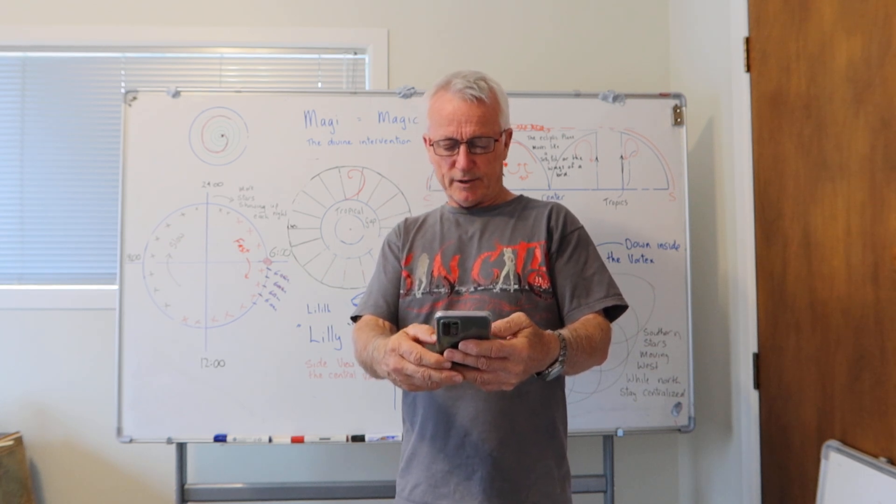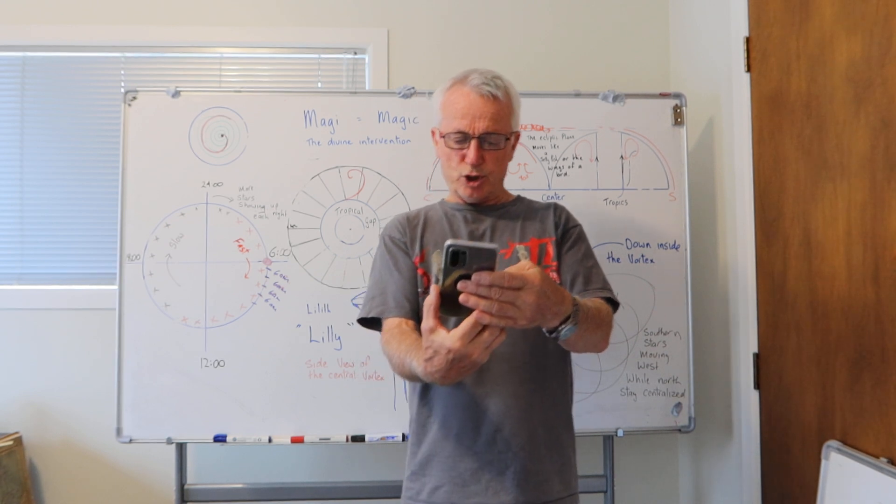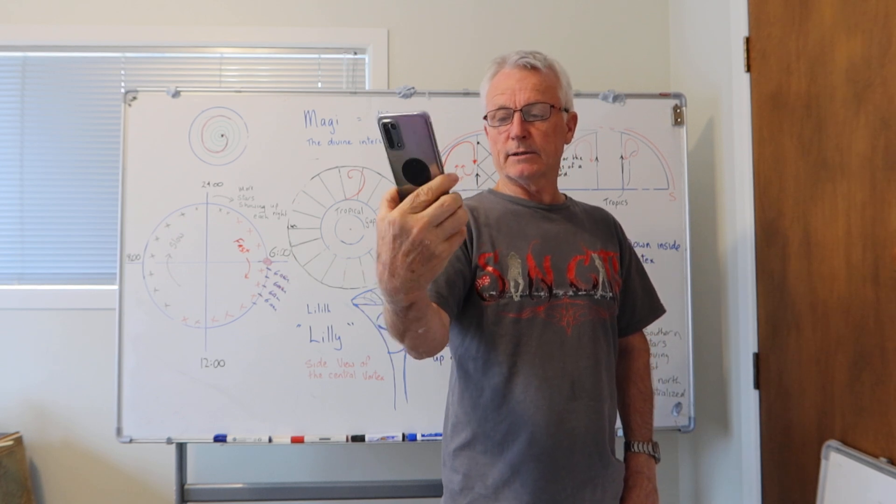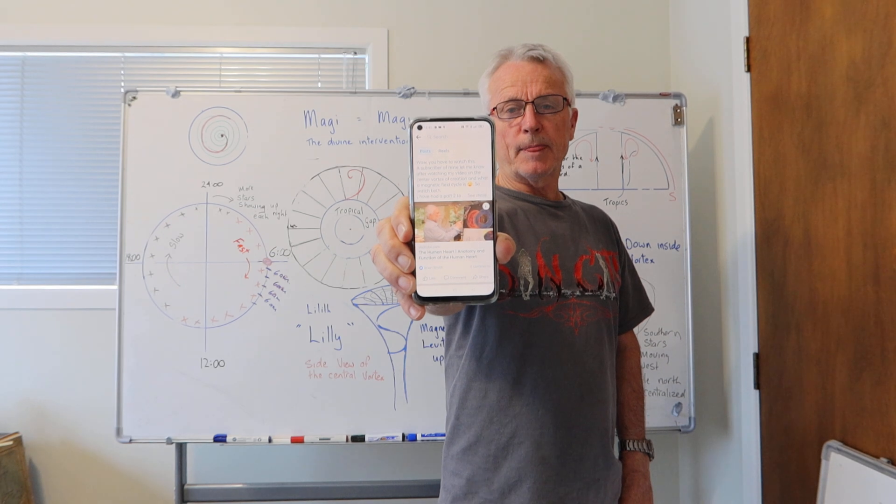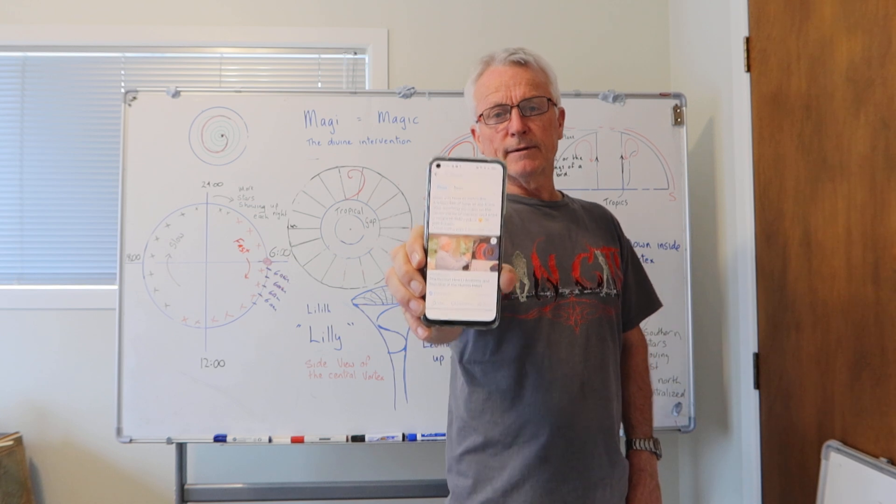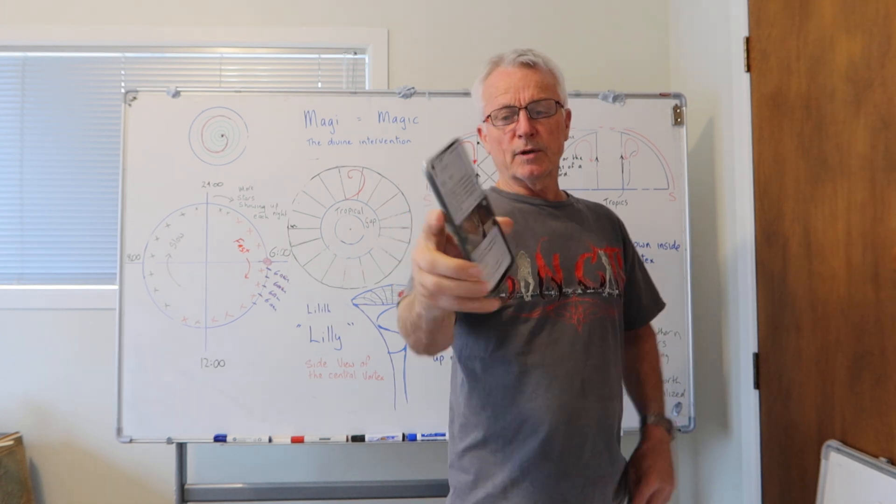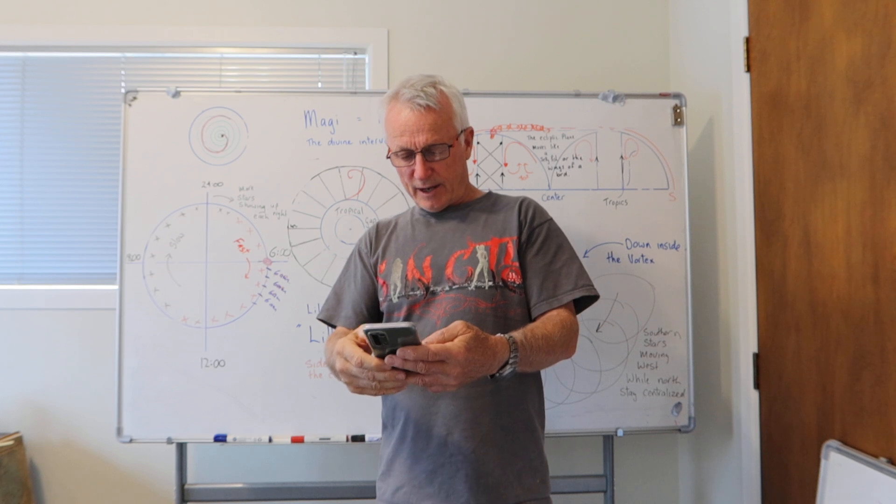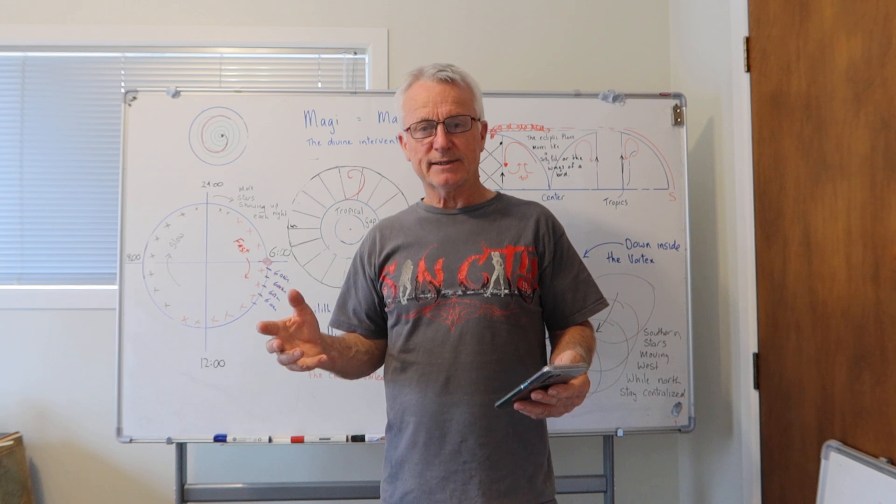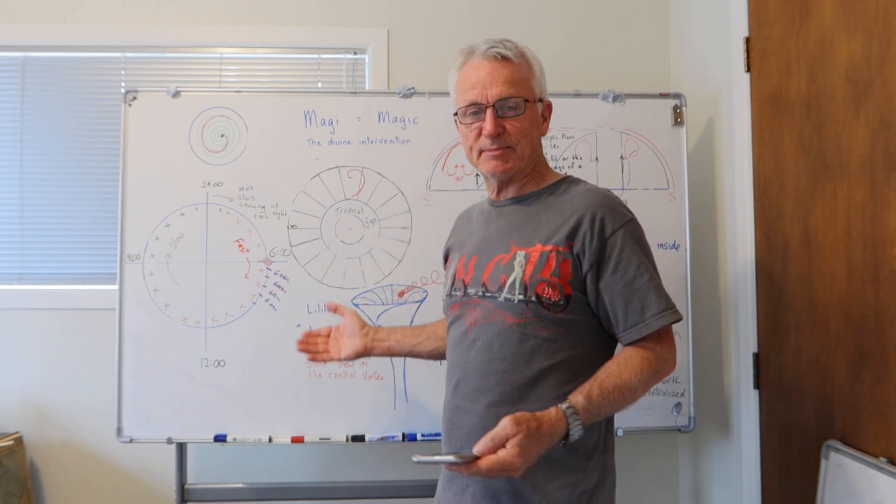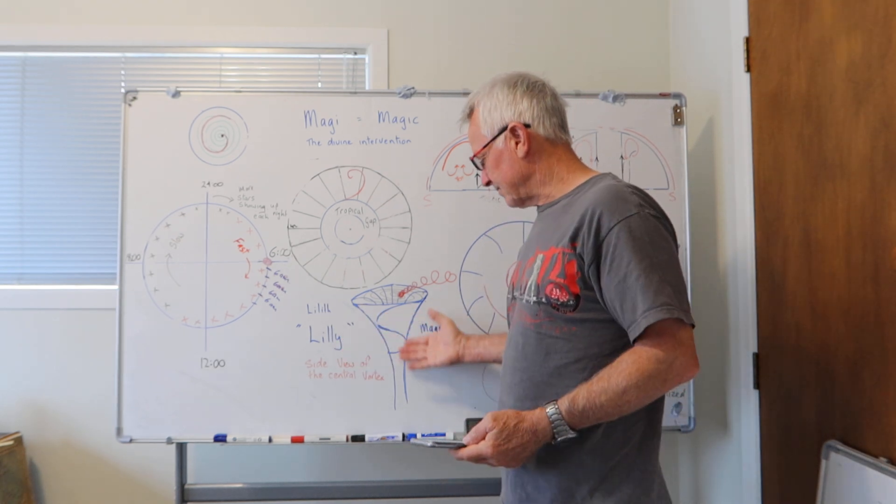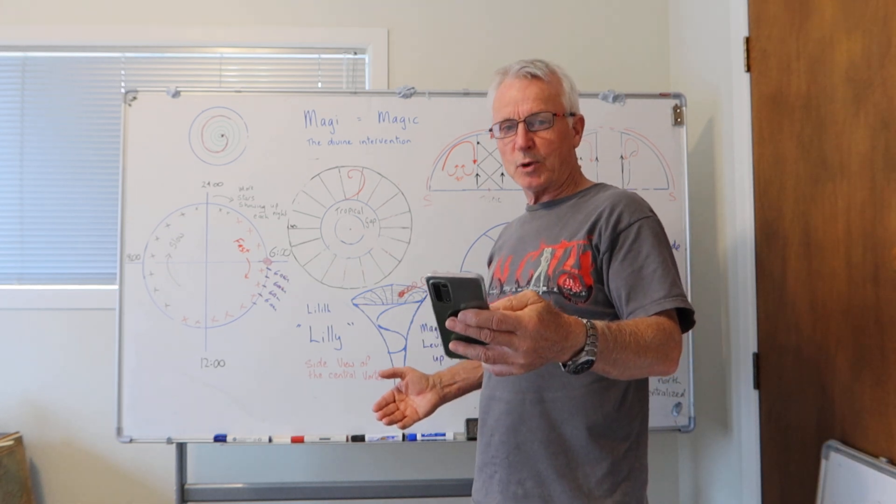But anyway, you need to watch this YouTube video. It's called The Human Heart, Anatomy and Function of the Human Heart. You can see there, make sure that's focusing. Now basically it boils down to the fact that the heart is the vortex of creation. It's the same system. It's mind blowing. It's not just a pump, it's a vortex. So you've got to watch that video.